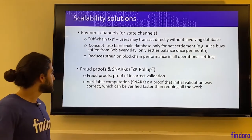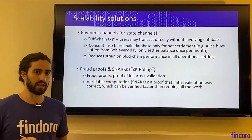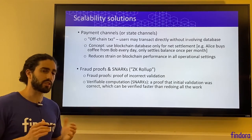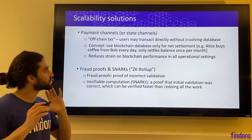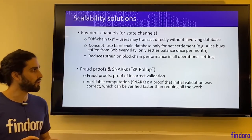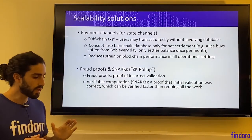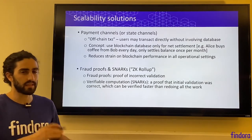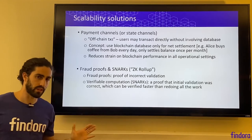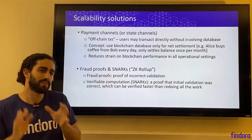Let's go over some of the solutions at a high level that we'll encounter in the rest of the lecture. The first is the concept of a payment channel or a state channel — often referred to as off-chain transactions in the blockchain lingo. This is the concept that users can transact directly without involving the database at all. You could use the blockchain database only for net settlement. For example, Alice buys coffee from Bob every day but they only need to send a transaction to the blockchain database at the end of the month to settle their overall balance. This naturally reduces the strain on blockchain performance in all operational settings.